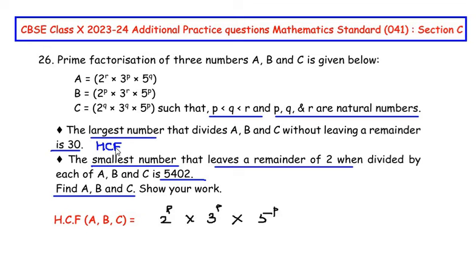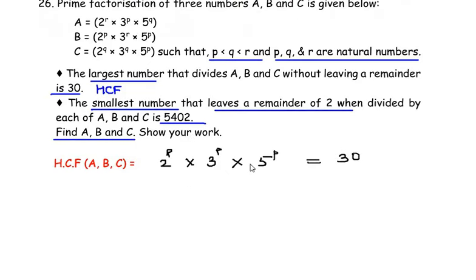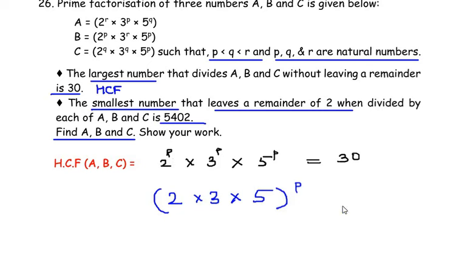They have given that the HCF is 30, so we equate: 2^p × 3^p × 5^p = 30. Using the laws of exponents, since each term has the same power p, we can write this as (2 × 3 × 5) raised to the power of p, which gives us 30 to the power of p. Now 2 × 3 × 5 = 30, so 30^p = 30, and we can write 30 as 30 to the power of 1.